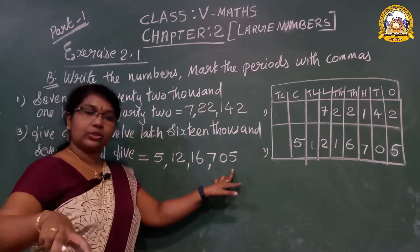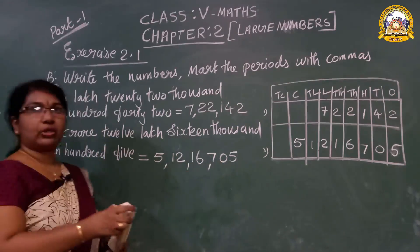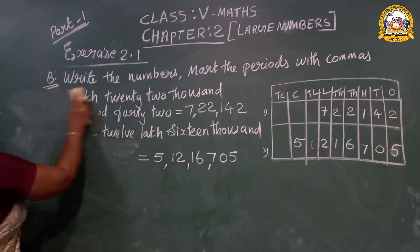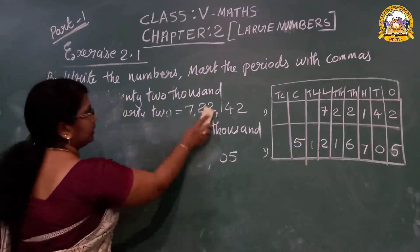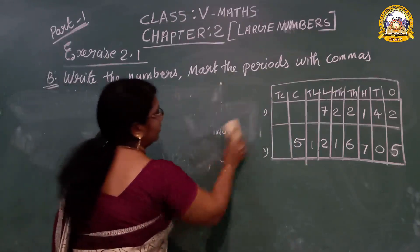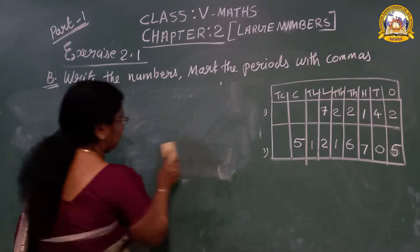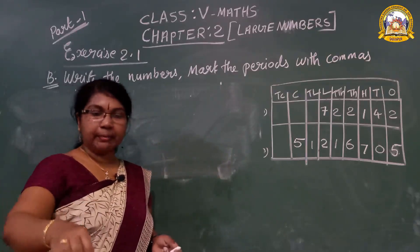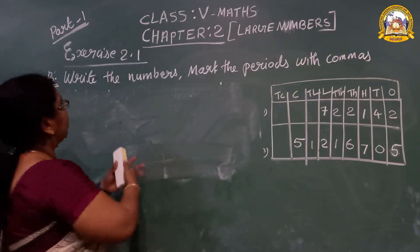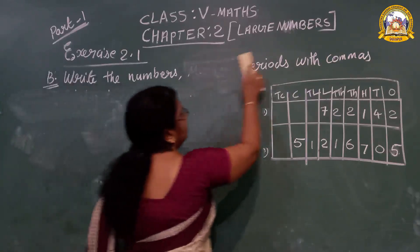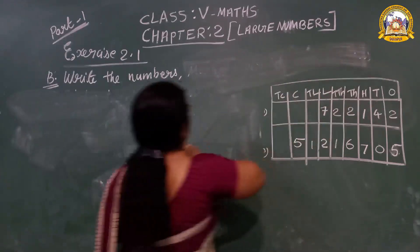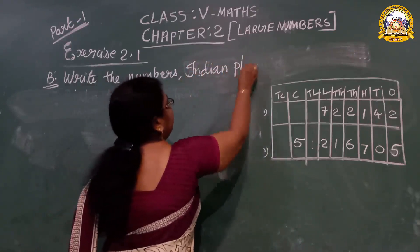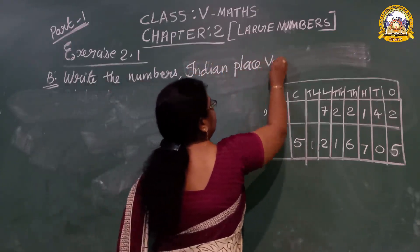Now understood, students? There are three more questions you have to do as homework. Now look here — read the question. Write the numbers in the Indian place value chart. Here you have to write the Indian place value chart. Two types of number systems we are going to study: Indian place value and international place value. International place value will be explained in the next exercise 2.2.